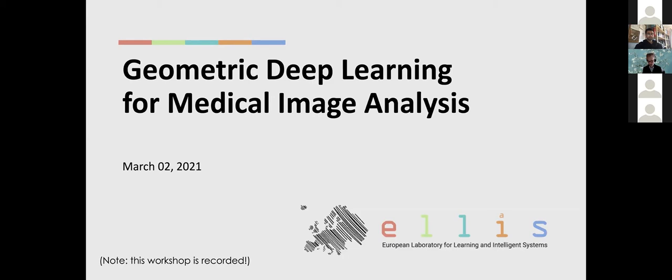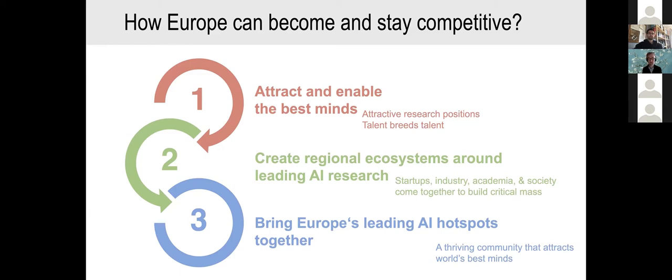This is an ELLIS workshop and I wanted to take the opportunity to quickly tell you something about ELLIS and hopefully encourage people to become a member, fellow, start a program, or start an ELLIS unit. The idea behind the European Lab for Learning and Intelligent Systems is basically to attract and enable the best minds in Europe, give them opportunities, and create regional ecosystems around leading AI research centers.